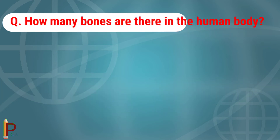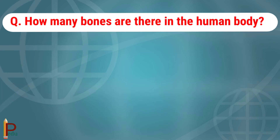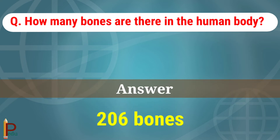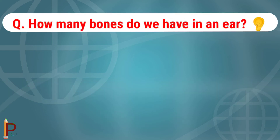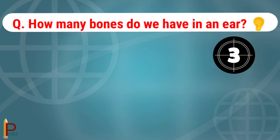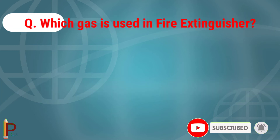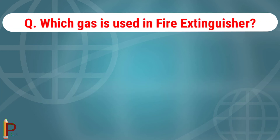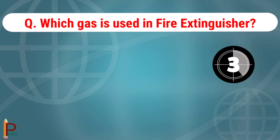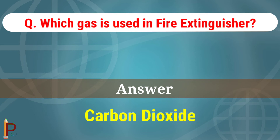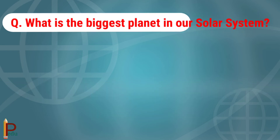How many bones are there in the human body? The answer is 206. How many bones do we have in an ear? The answer is three bones. Which gas is used in a fire extinguisher? The answer is carbon dioxide.